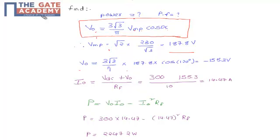Now we substitute the values in the formula: (3√3/π) × 187.8 × cos(120°). The value of cos(120°) is -0.5. So we have (3√3/π) × 187.8 × (-0.5). After solving this,